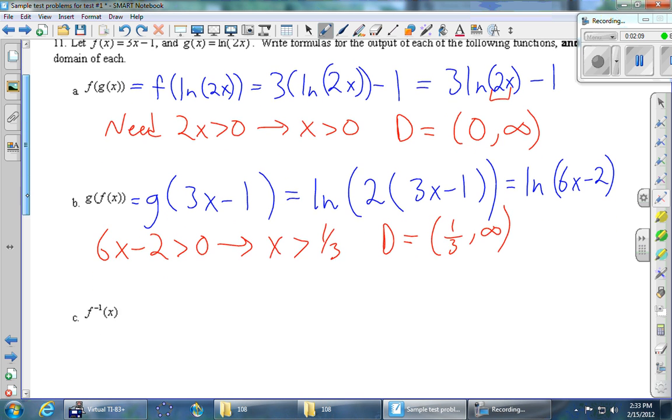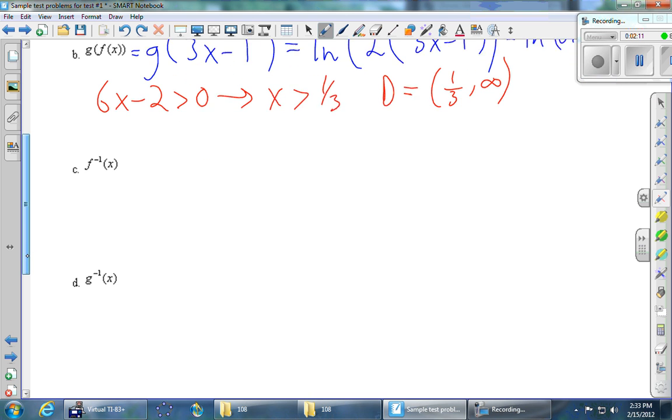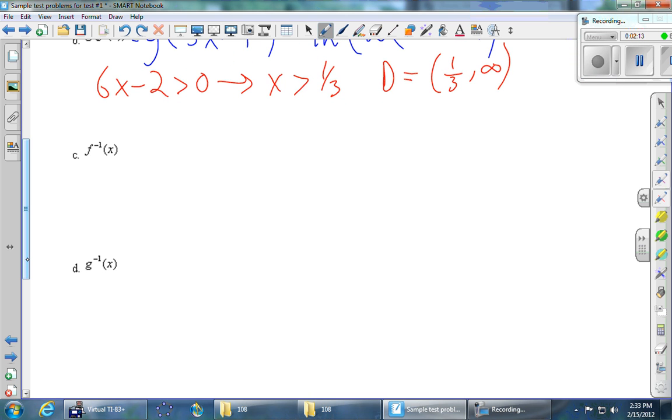f inverse of x. So we've got 3x minus 1 is the original function. So there's an intuitive way, which sometimes works, and then a procedural way, which always works. So the intuitive way first, f is a function which first triples the number x and then subtracts 1. So we first triple and then subtract 1.